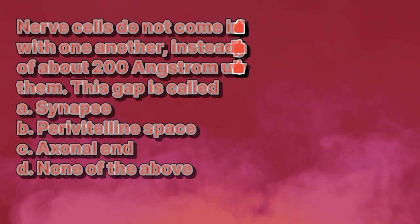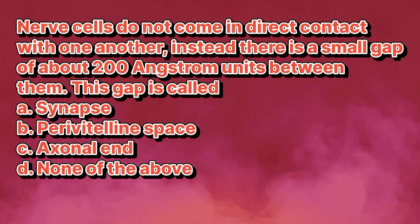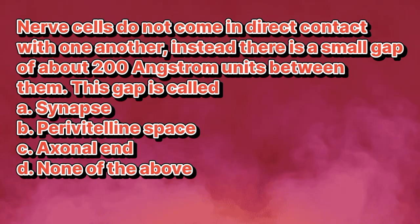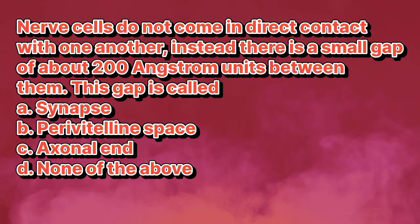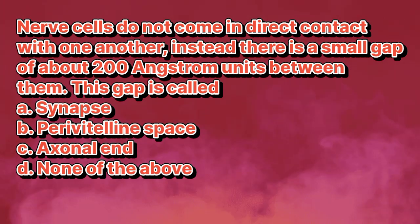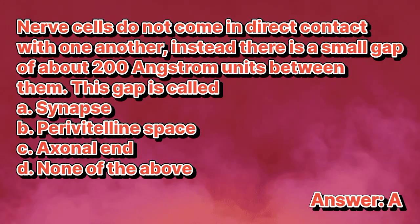Nerve cells do not come in direct contact with one another. Instead, there is a small gap of about 200 angstrom units between them. This gap is called: A. Synapse. B. Paravitalene space. C. Axonal end. D. None of the above. The answer is letter A.